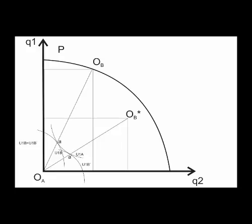So OB and OB star are two points of origin for individual B that lead to the same utilities for both individuals A and B. The Scitovsky indifference curve is simply a collection of all such origin points that lead to that same initial level of utility.